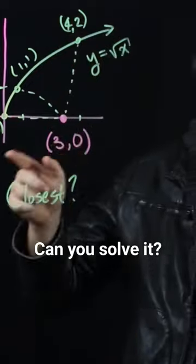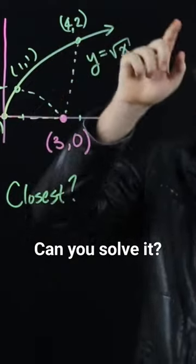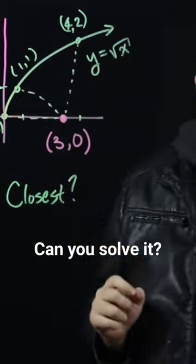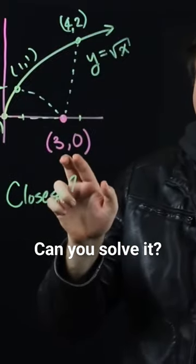So which of these points, and there's infinitely more of all the points on the graph of y equals the root of x? Which one is closest to the point 3?